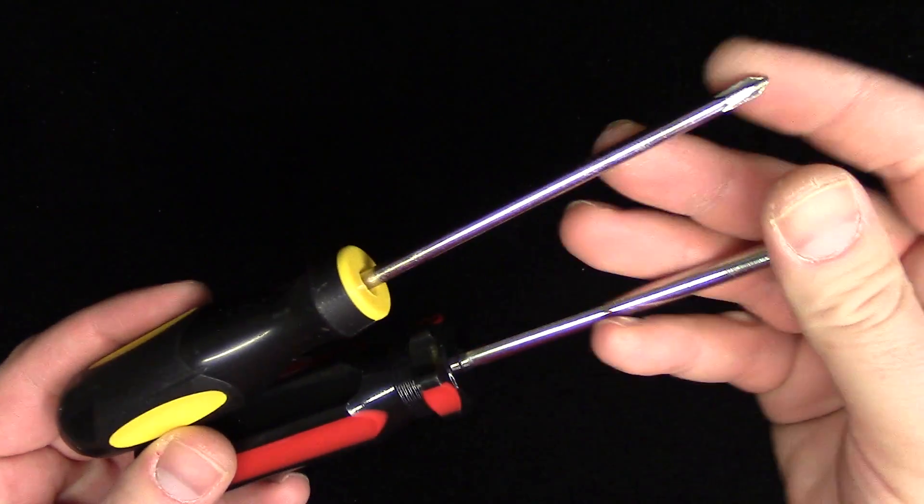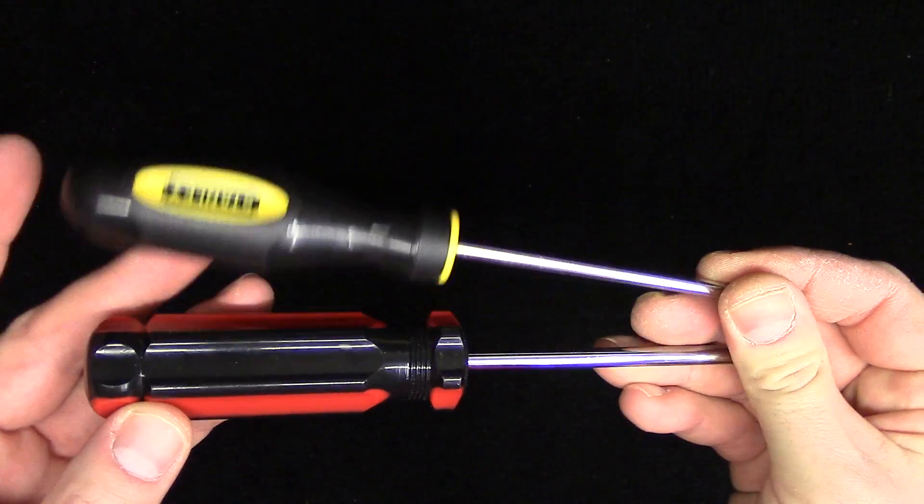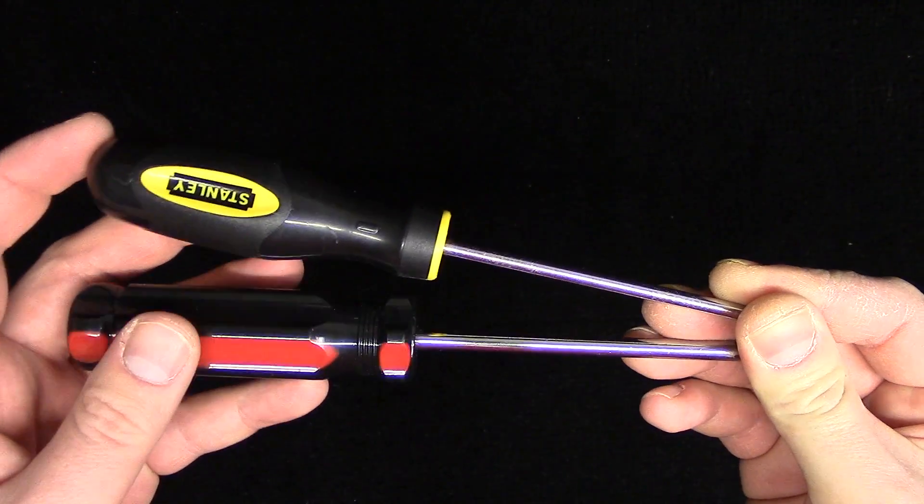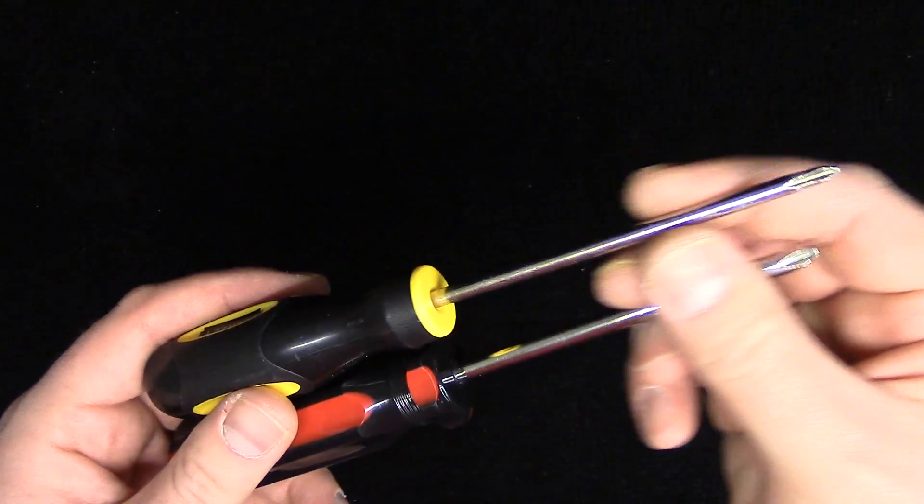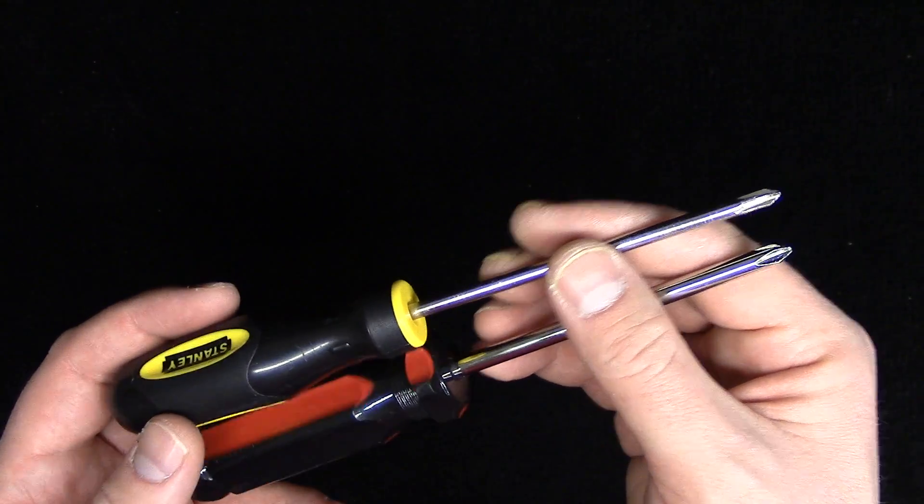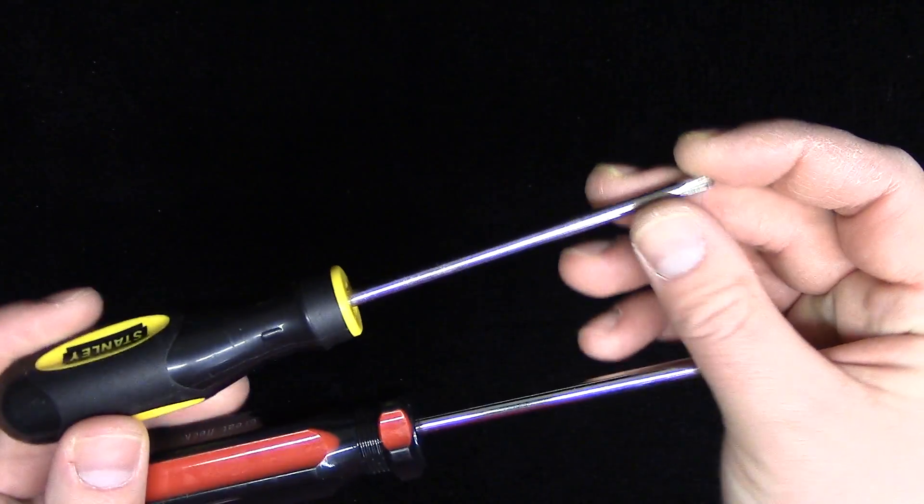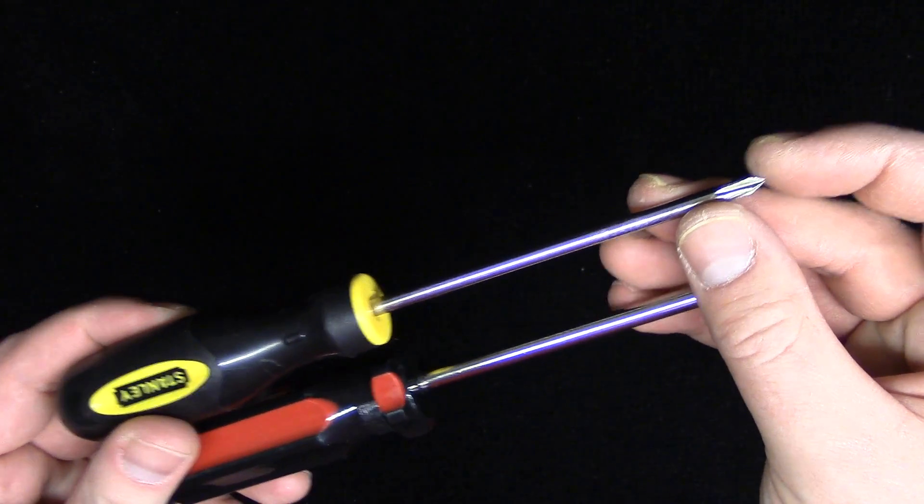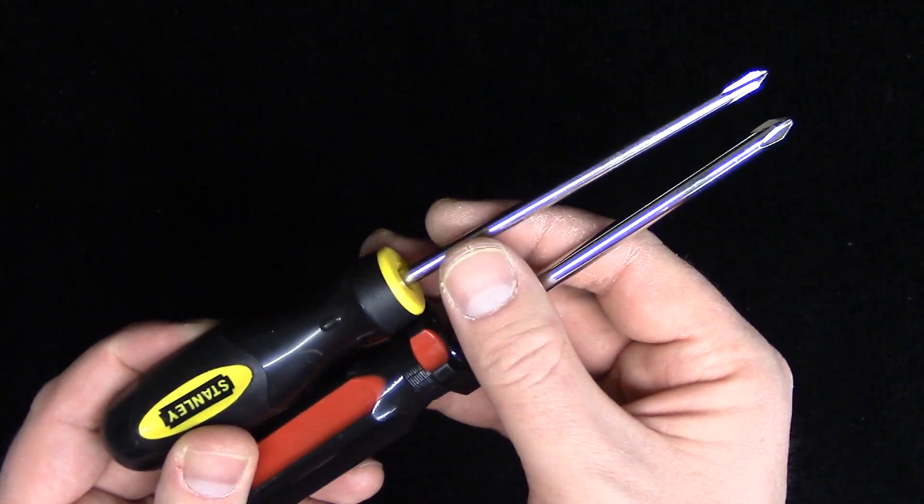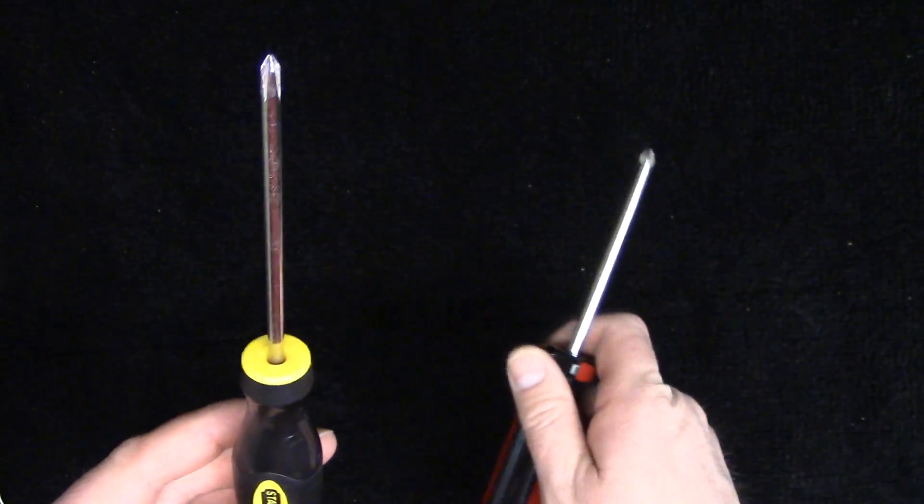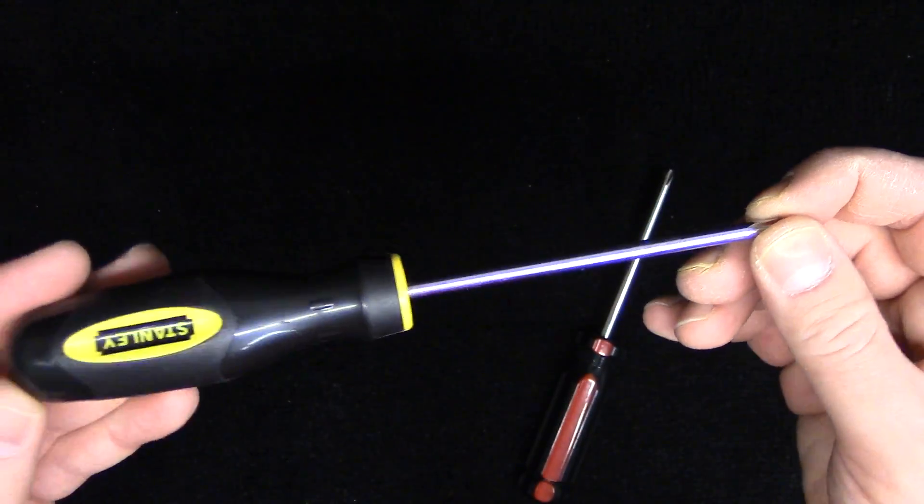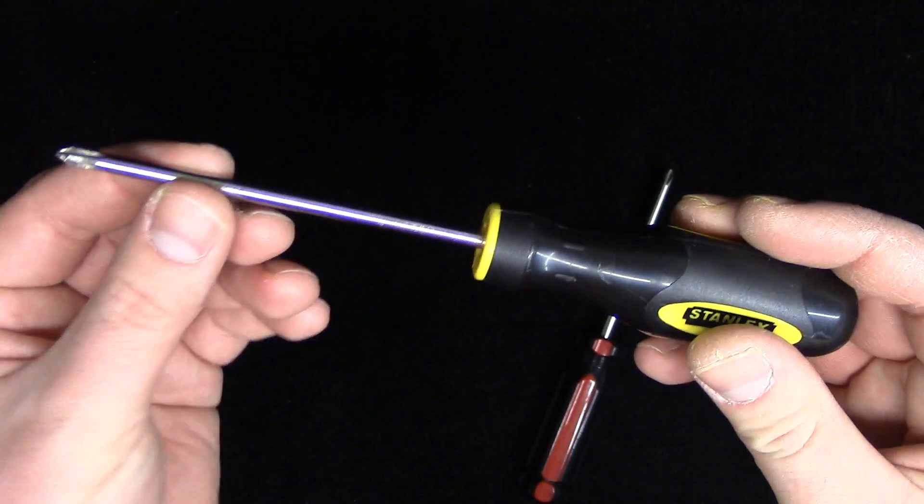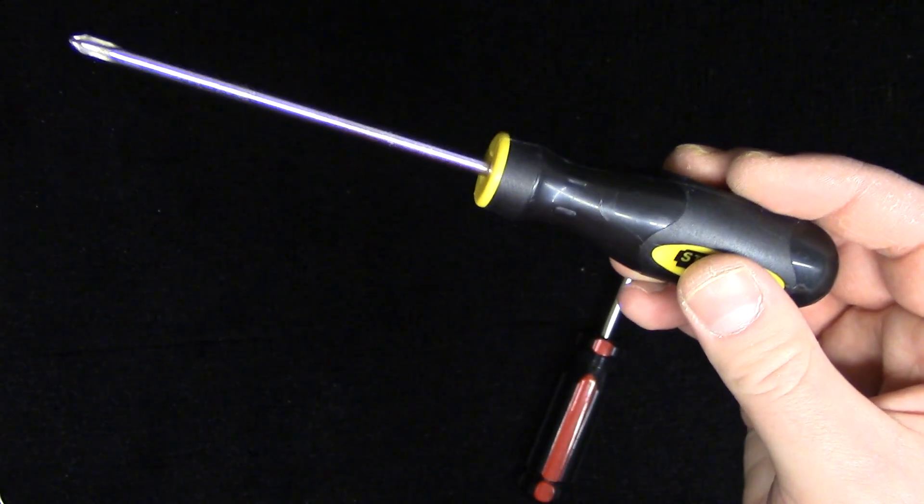In this video I want to show you how to magnetize your tools. These are just normal screwdrivers and I always like to do this because if you're taking apart something and it's in a tight spot, I always like the screw to stick to the screwdriver and then carefully pull it out. So if your tool is not already magnetized, some of them have a magnet in the front.